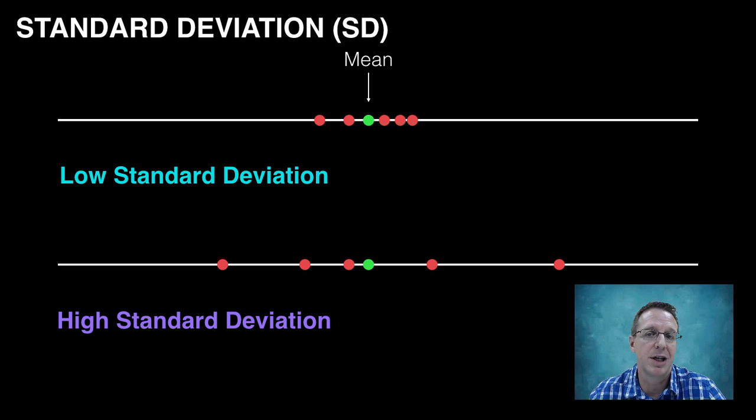It should be clear from this that the standard deviation is a measure of the variability within a sample or data set. A low standard deviation means that the data set has a low degree of variability, whereas a high standard deviation simply means that data has a high degree of variability. So, why is this important?